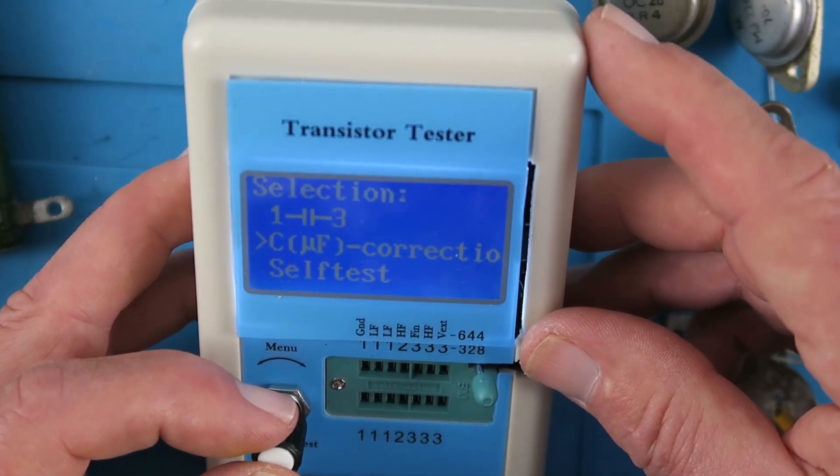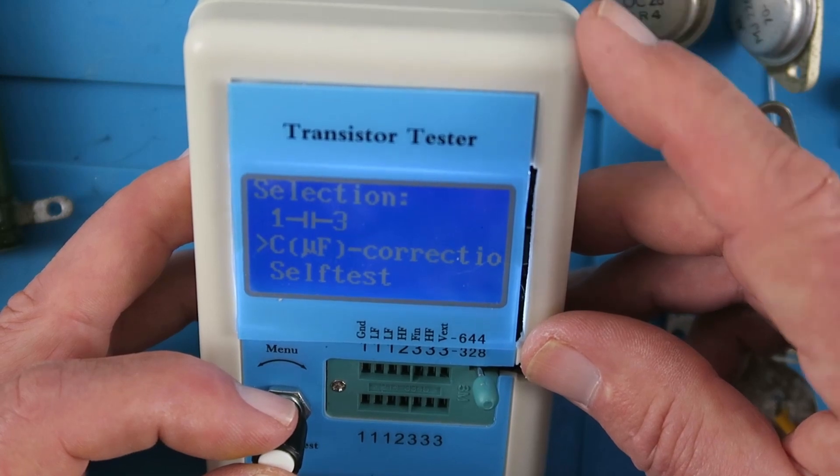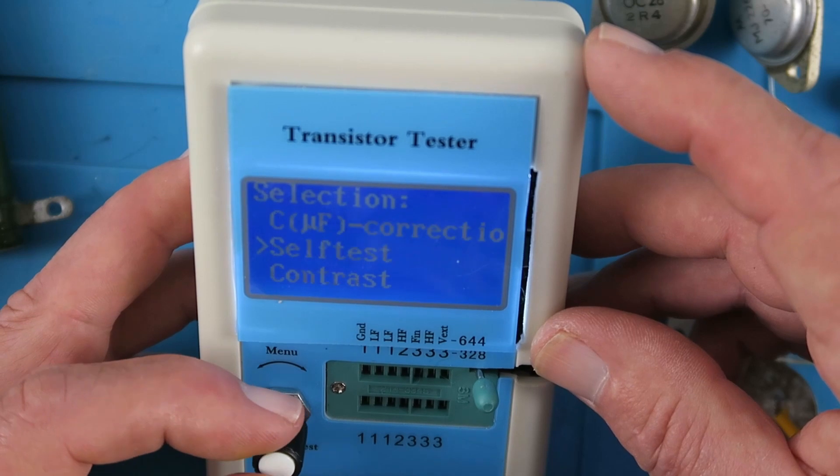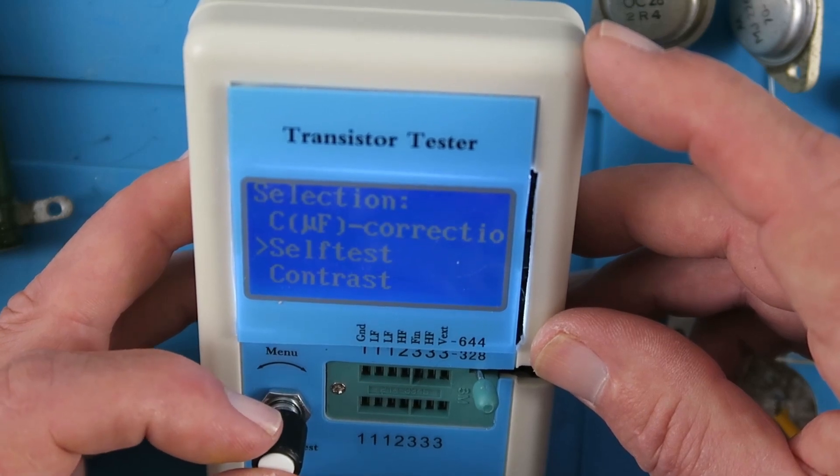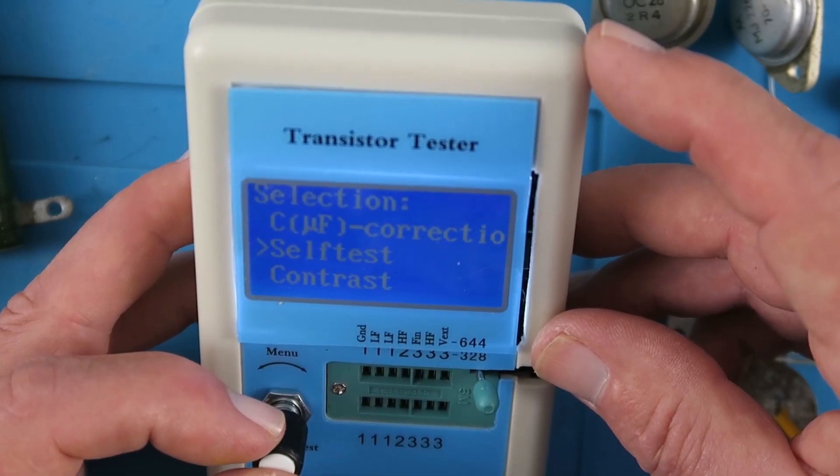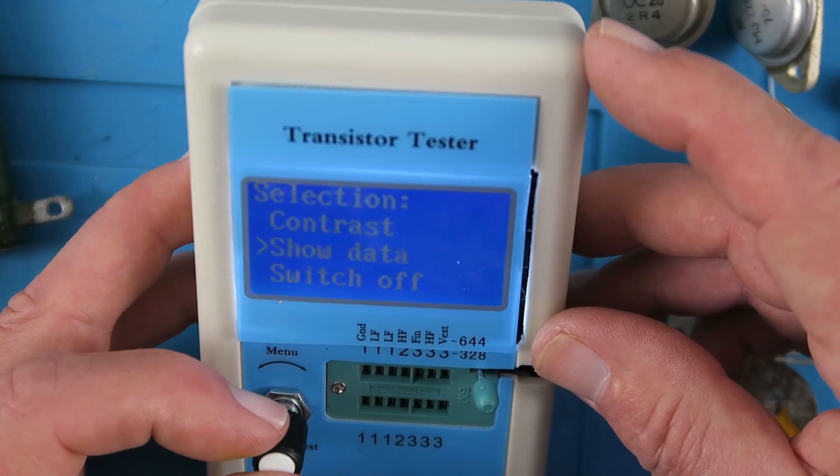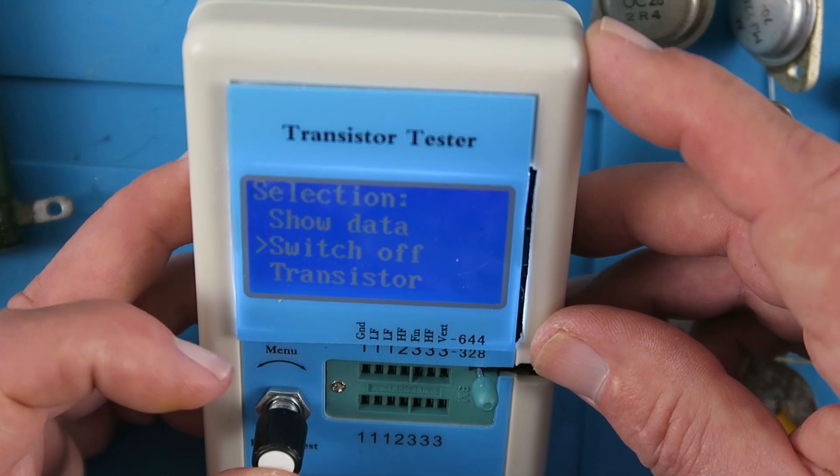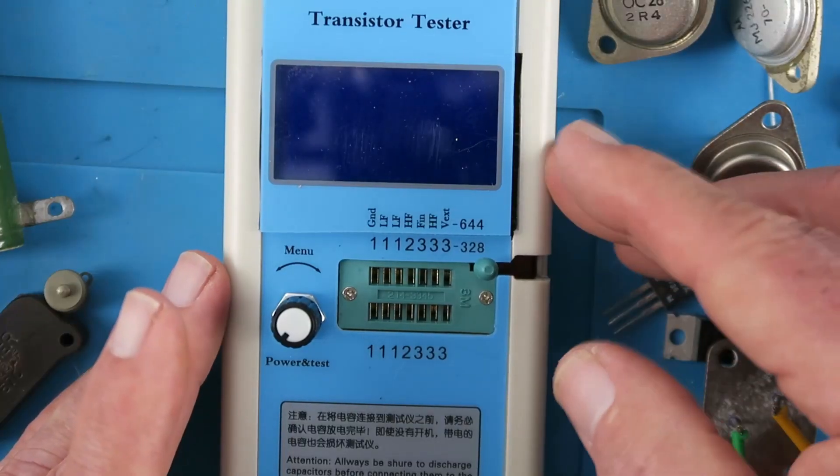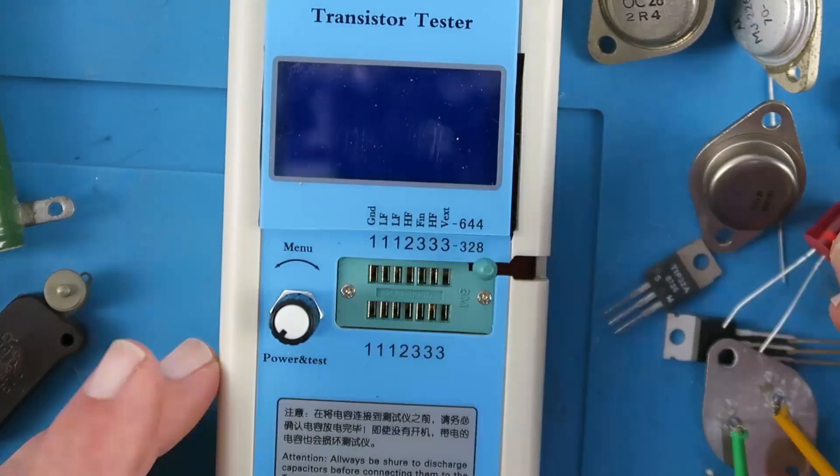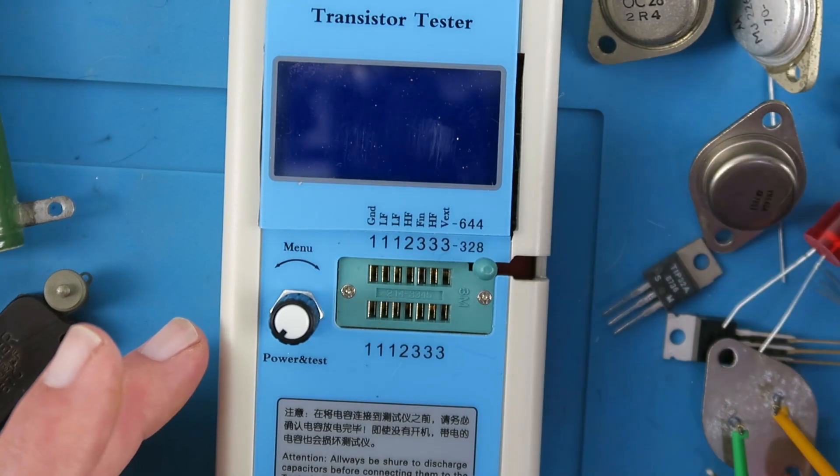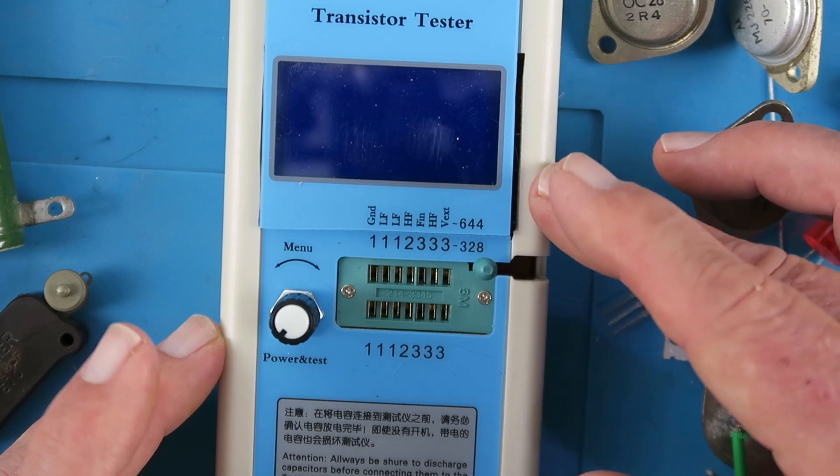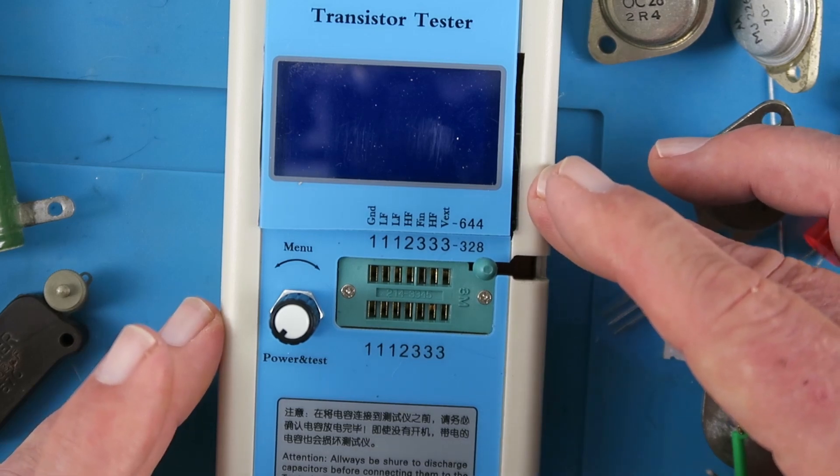It can give you a pulse width modulation signal. You can test just capacitor ESR. You can correct, if you have another calibrated source, you can correct the capacitance measurement here. The self-test that we saw in the build video to calibrate the system. Change the contrast of the screen. Show the recorded data inside. And finally switch off. So we'll go through those in another video. This video was really just for the basic component testing side of it. And in another video we'll take a look at those frequency and other options.